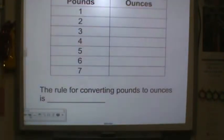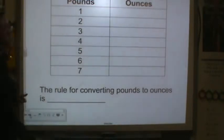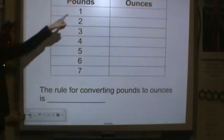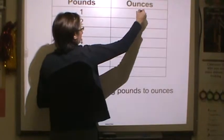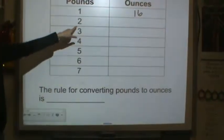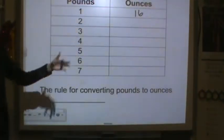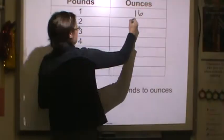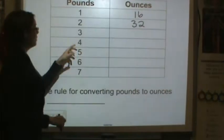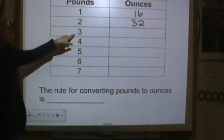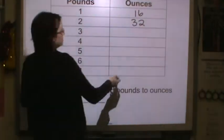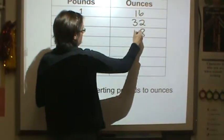So pounds to ounces, remember one pound as in your notes is 16 ounces. So one pound equals 16 ounces. What about two pounds? Well you have two groups of 16, 2 times 16 is 32. What about three pounds? You have three groups of 16, so you'd have 48.